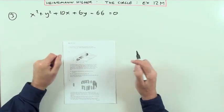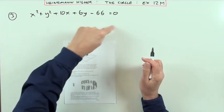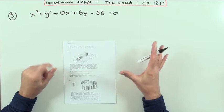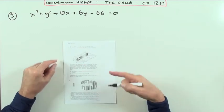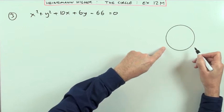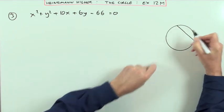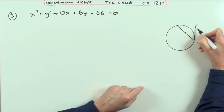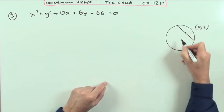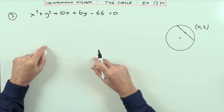For number three, the point (0, 2) is the midpoint of a chord of this circle. Find the equation of that chord. You can answer this without drawing a diagram, but I'll draw one over here. There's a chord in a circle, and the midpoint is the point (0, 2).